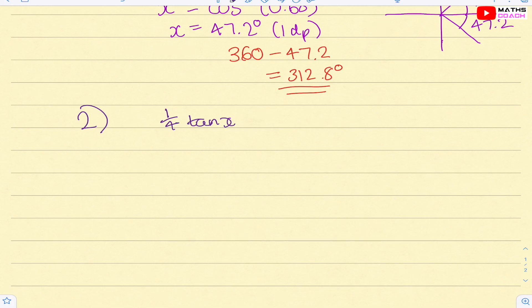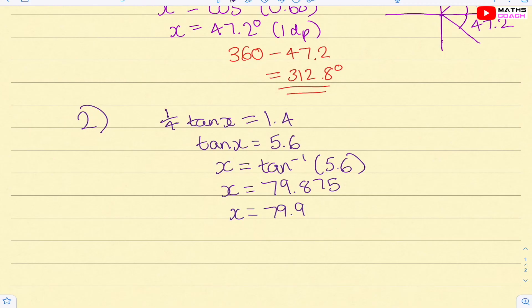So we've got a quarter tan x. And it's the same concept as algebra because we want to make x the subject of the formula. So first tan x, 1.4 times the 4, so you'll end up with 5.6. And the inverse tan minus 1 of 5.6. Just plug it in the calculator and make sure it is in degrees mode. And you've got 79.875. So three significant figures, that will be 79.9 degrees.